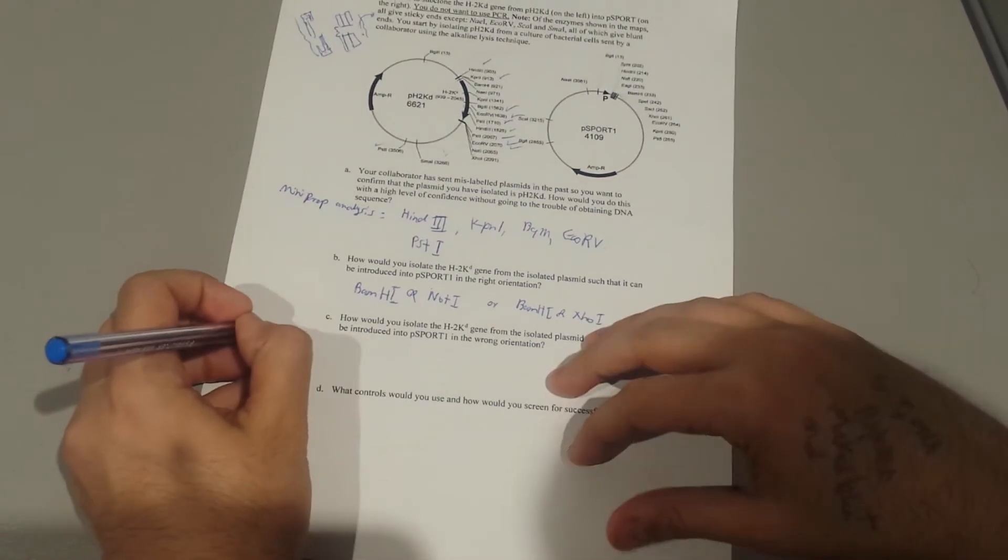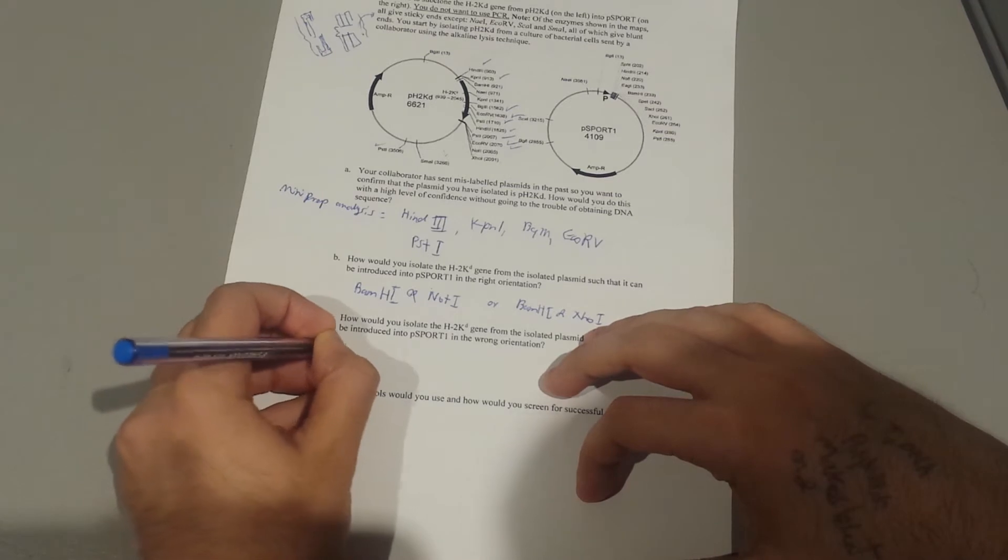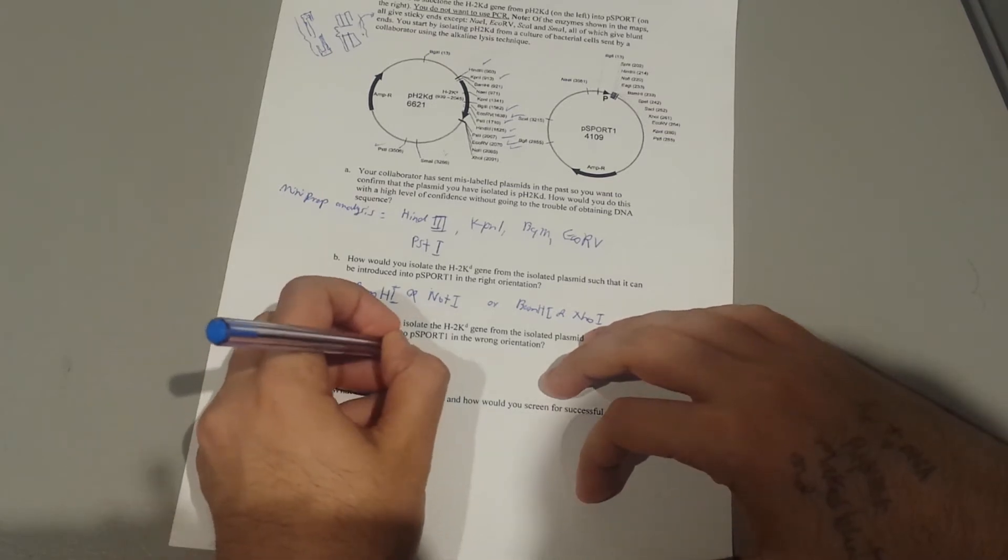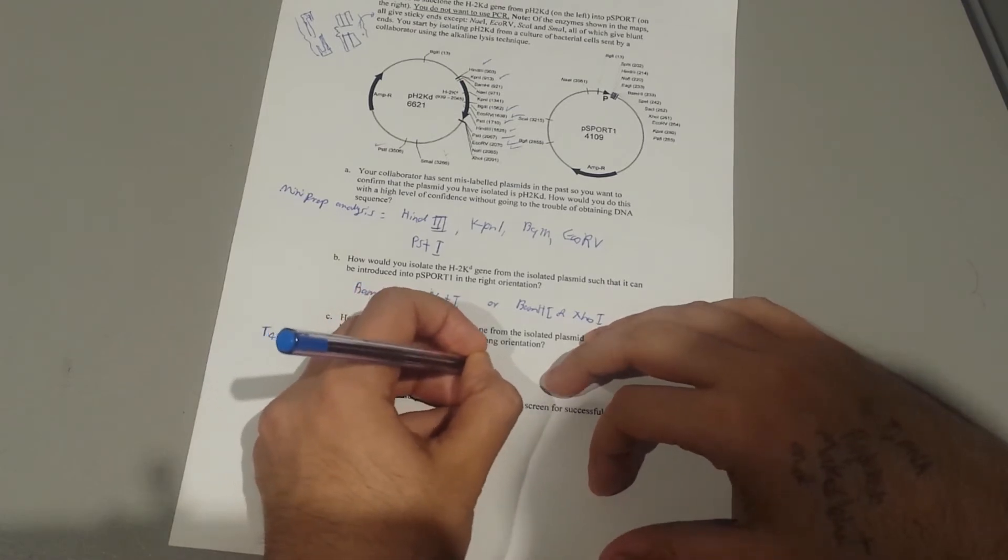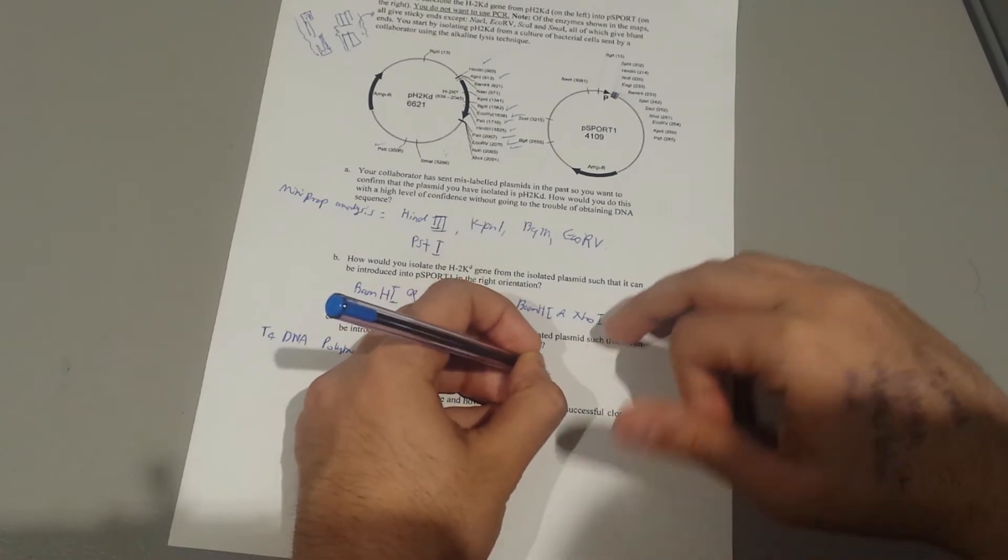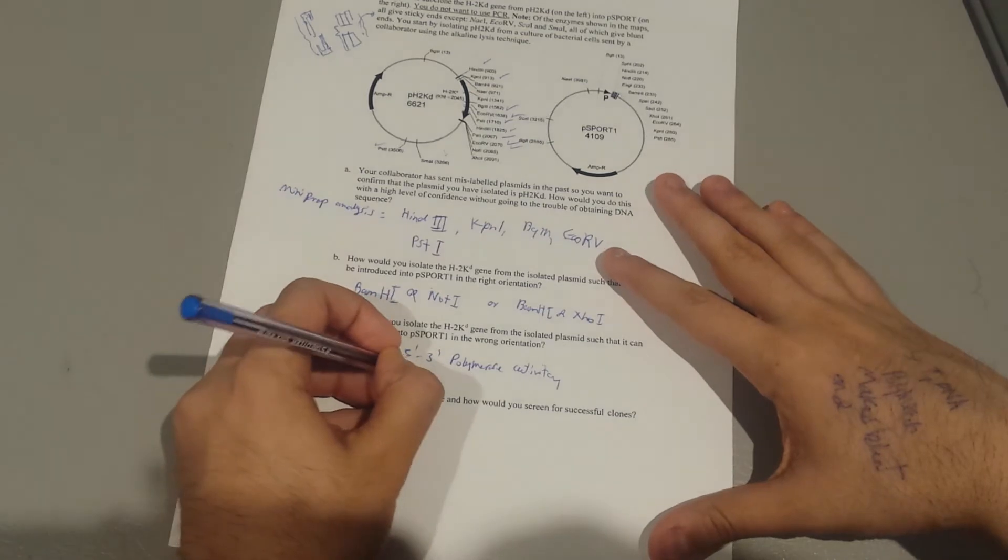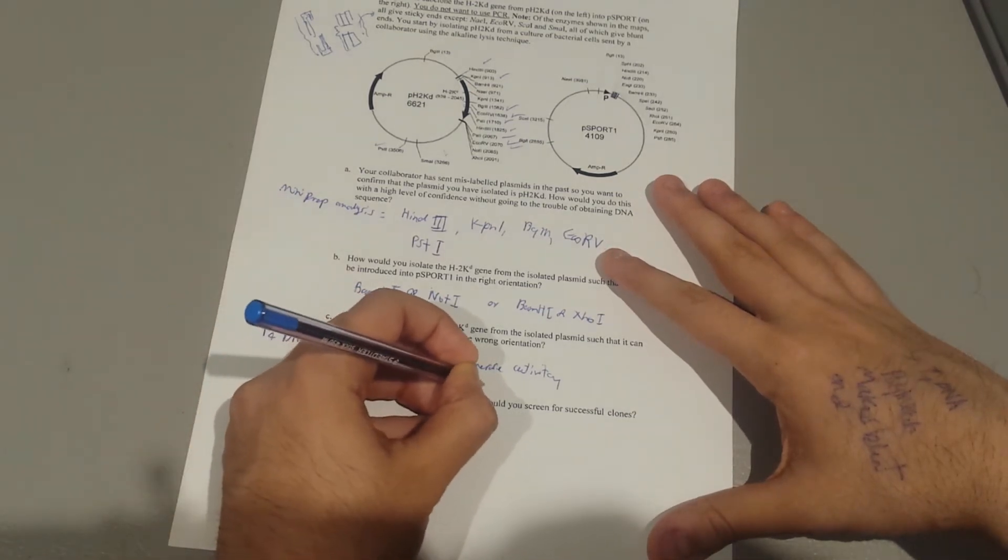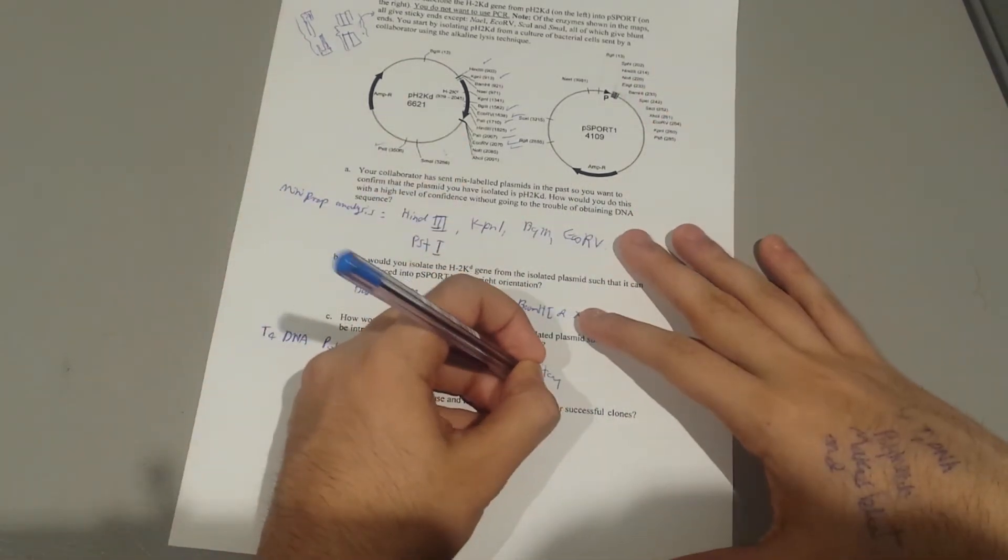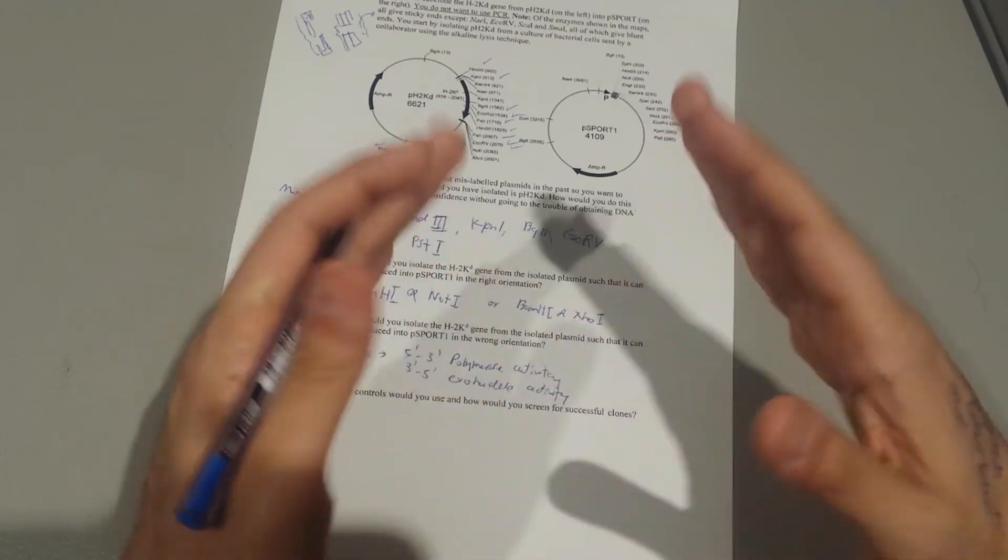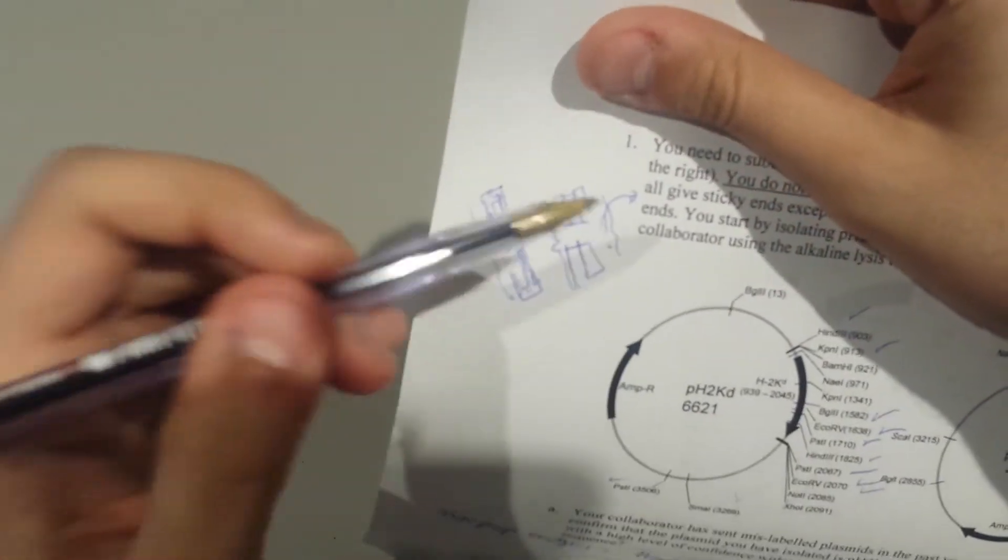By blunt end, you have a 50-50% chance of the orientation of the two sides on the gene, hence giving you wrong orientation. The very good way of doing a blunt end is using enzyme T4 DNA polymerase. It has 5' to 3' polymerase activity, meaning it can do DNA replication, add more DNA nucleotides, and it has 3' to 5' exonuclease activity, meaning it can degrade the nucleotides.